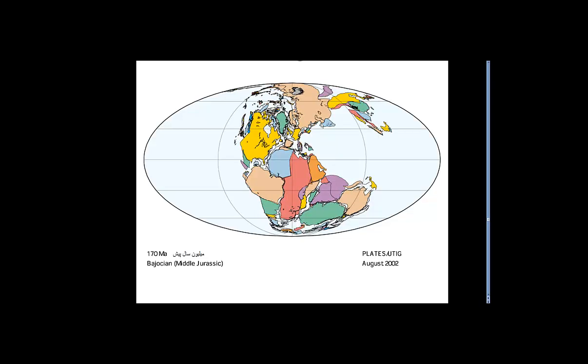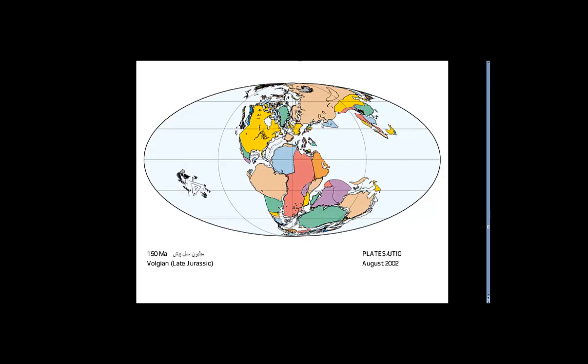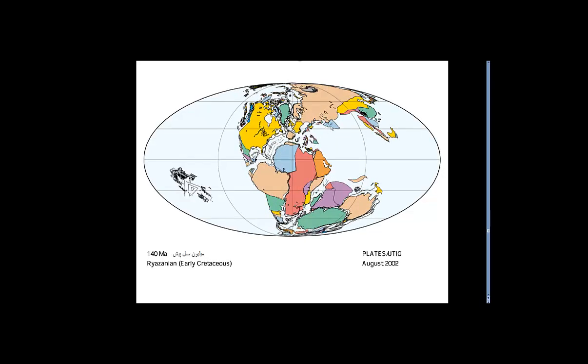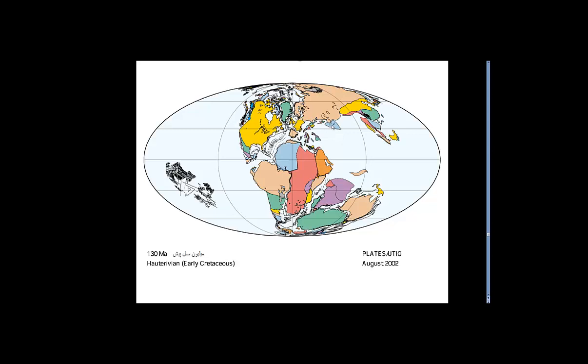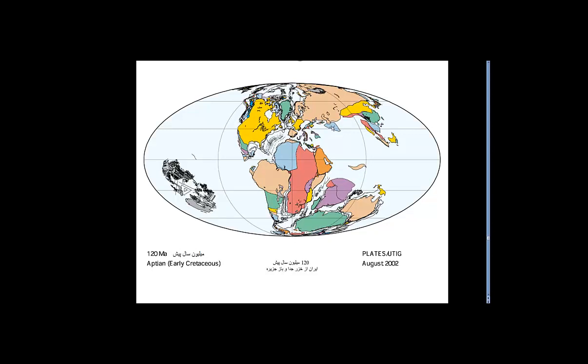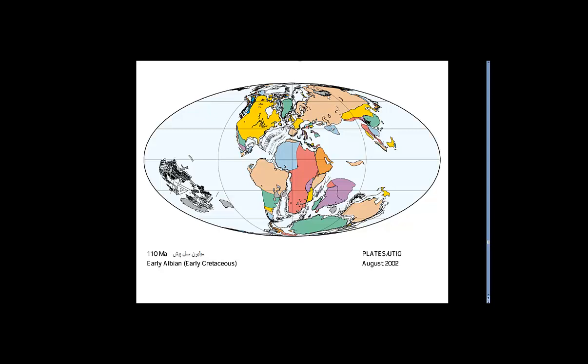Now this is the point where the Pangea starts to drift. You can see Africa separating, North America separating. 130 million years ago, Iran becomes an island again. Eurasia is forming, North America, South America.